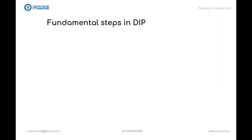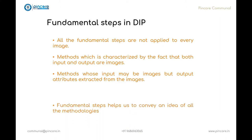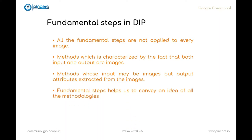When we consider an image, all the fundamental processes will not be applied to the image. Therefore, it is helpful if we divide the materials of digital image processing into two broad categories. Methods which are characterized by the fact that both input and output are images, and methods whose input may be images but output are the attributes extracted from the images such as edges, contours, and identity of individual objects. Fundamental steps help us convey an idea of all the methodologies that can be applied to the image for different purposes and possibly with different objectives.